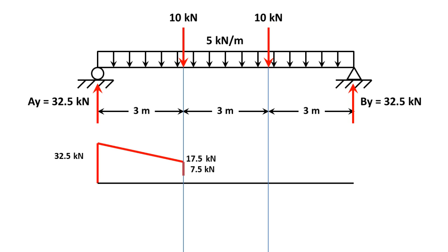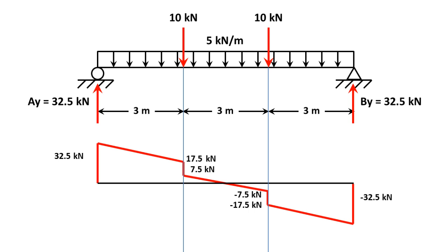After the concentrated load I decrease again at 5 kilonewtons per meter. Going down by 15 kilonewtons from positive 7.5 gets me to negative 7.5. Then the other 10 kilonewton concentrated load pushes me down to negative 17.5, and decreasing again I reach negative 32.5. Since the loading pattern is symmetrical about the middle, I'd expect the shear force diagram to be symmetrical about the middle as well.